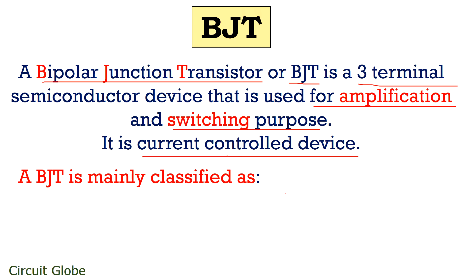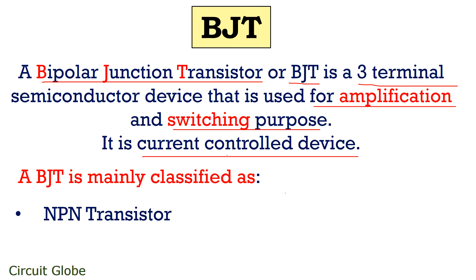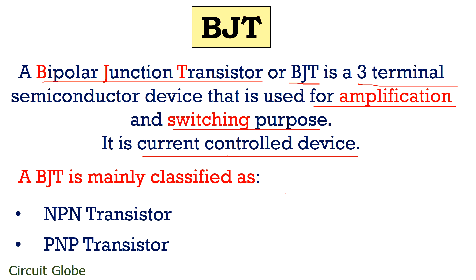BJTs are mainly classified as NPN and PNP transistors. The operating principle of both NPN and PNP transistors is the same, but the construction and biasing arrangement of the two generates a difference.